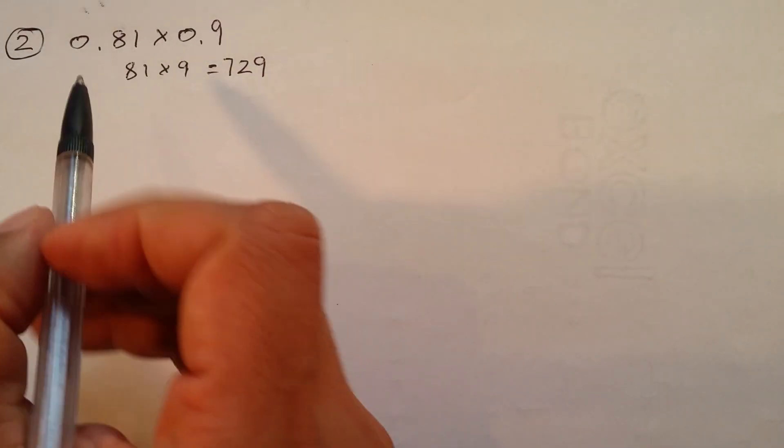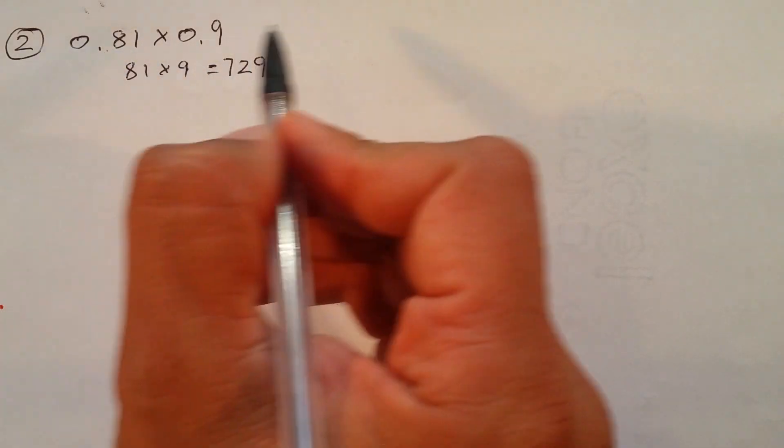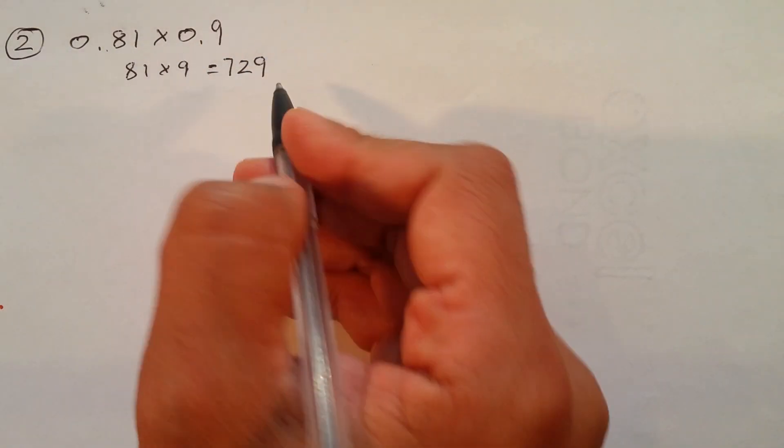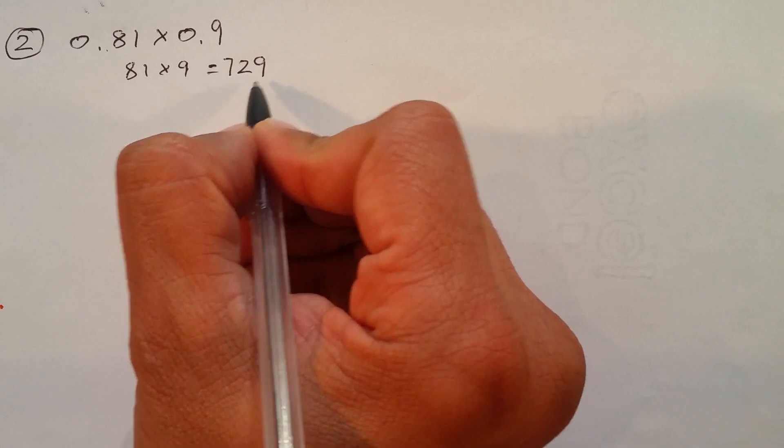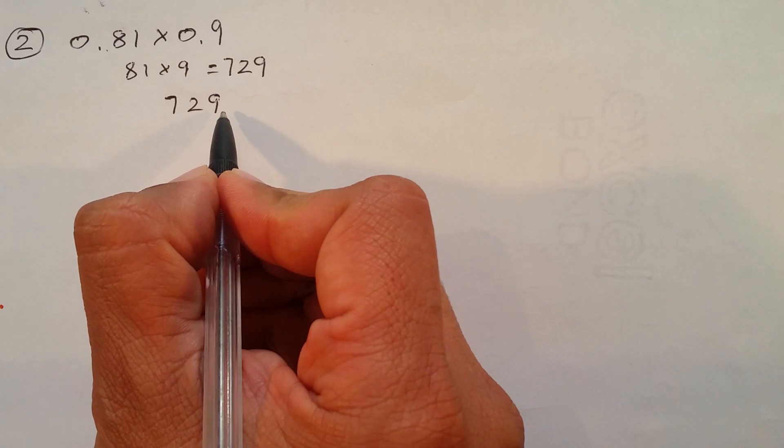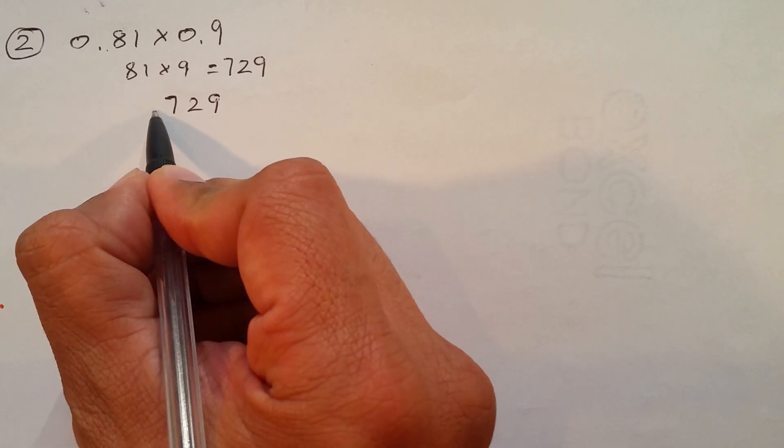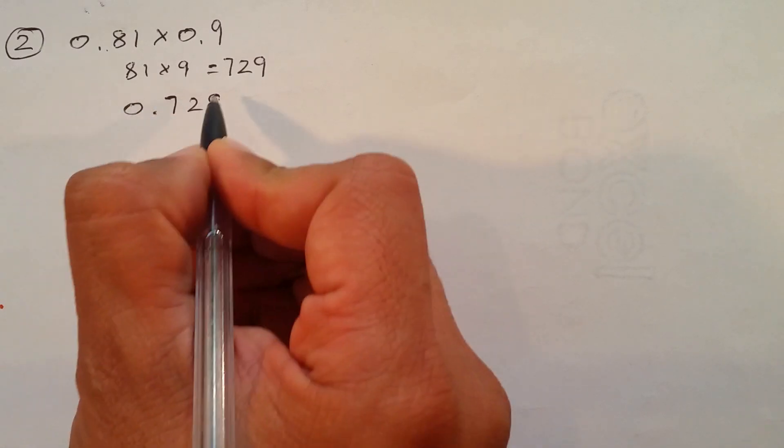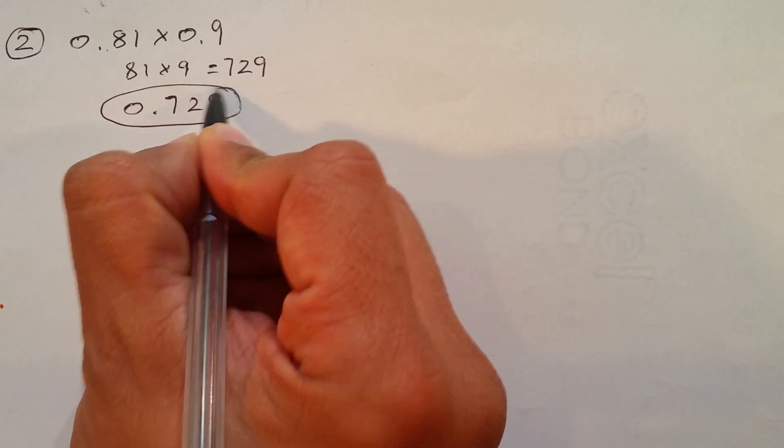Now, decimals. Put the decimals back now. Decimal after two numbers. Decimal after one number. 2 plus 1, 3. Decimals should be after three numbers. So, 7, 2, 9. Decimal going back after three numbers. 1, 2, 3. And 0 in the front. That's your final answer.